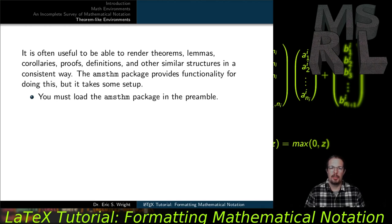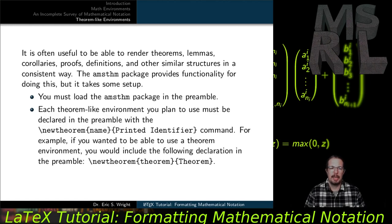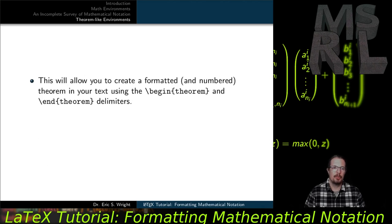First, you'll have to load the AMSTheorem package in the preamble. Each theorem-like environment you plan to use must be declared in the preamble with the \newtheorem command. This command takes two inputs: the name of the environment you're going to use, and the printed identifier. For example, to use a theorem environment you would declare: \newtheorem{theorem}{Theorem} — where lowercase theorem is the environment name and capital Theorem is the identifier that appears in your formatted document.